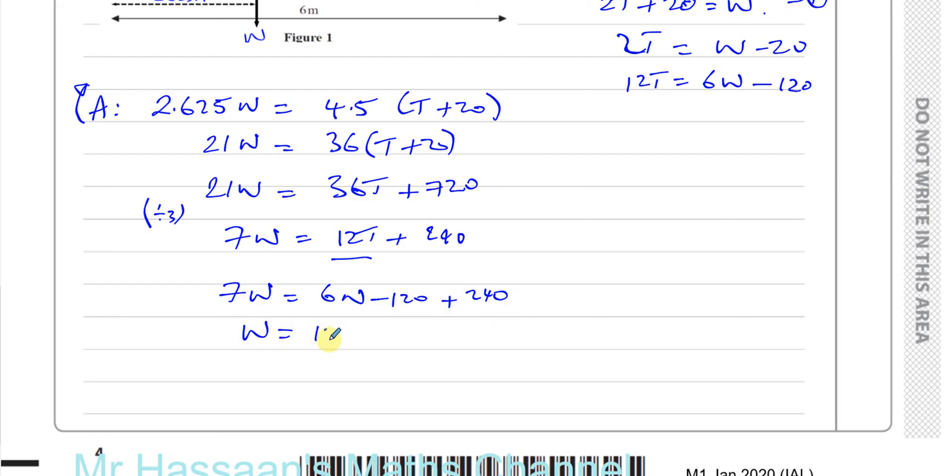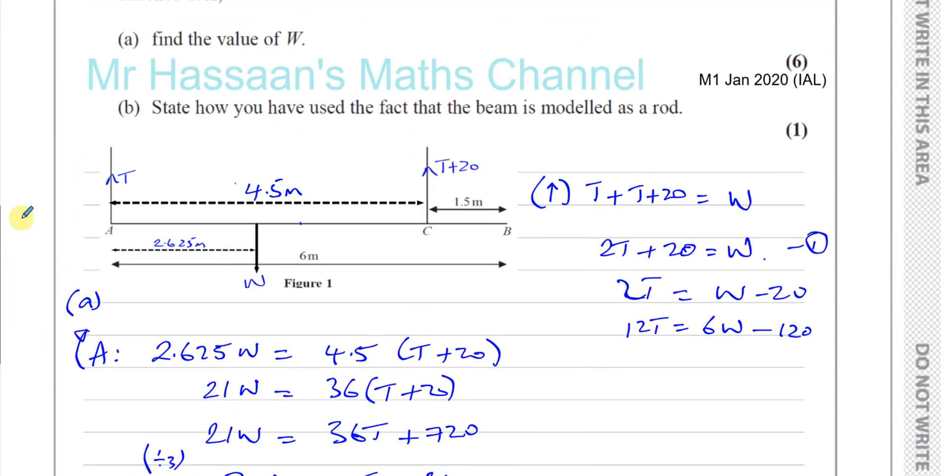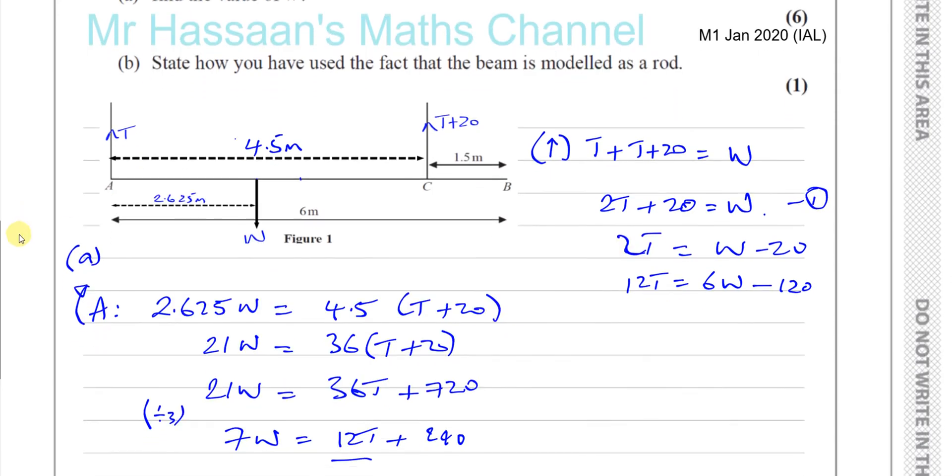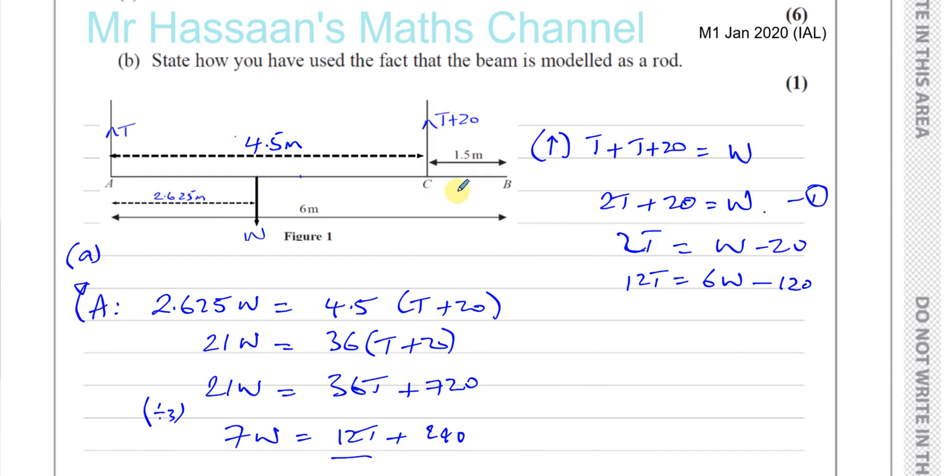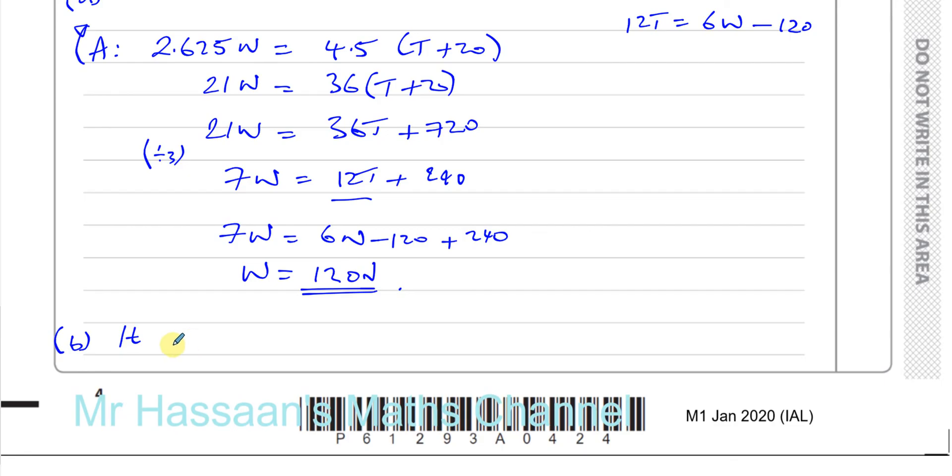So there's the answer to part A. And for part B, it's just a little explanation here. It says, state how you have used the fact that the beam is modelled as a rod. Well, a rod is something that remains rigid. So it does not bend nor buckle. So we can just mention, it does not bend nor buckle. That's fine. It remains straight. It does not bend or buckle. Okay, this is what it means by the fact it's rigid. And there we have the answer to question number 2.